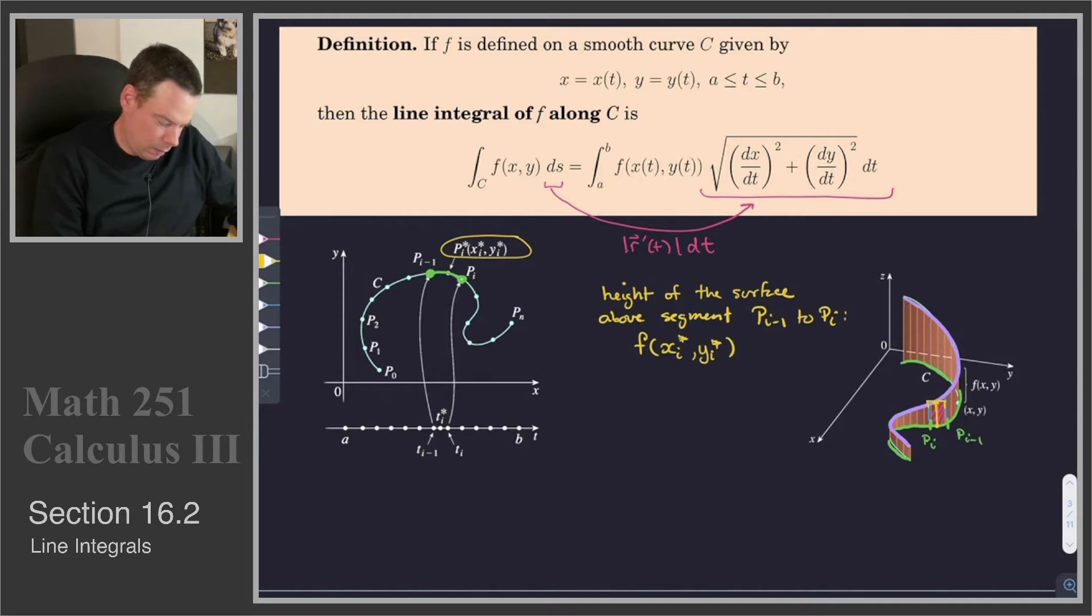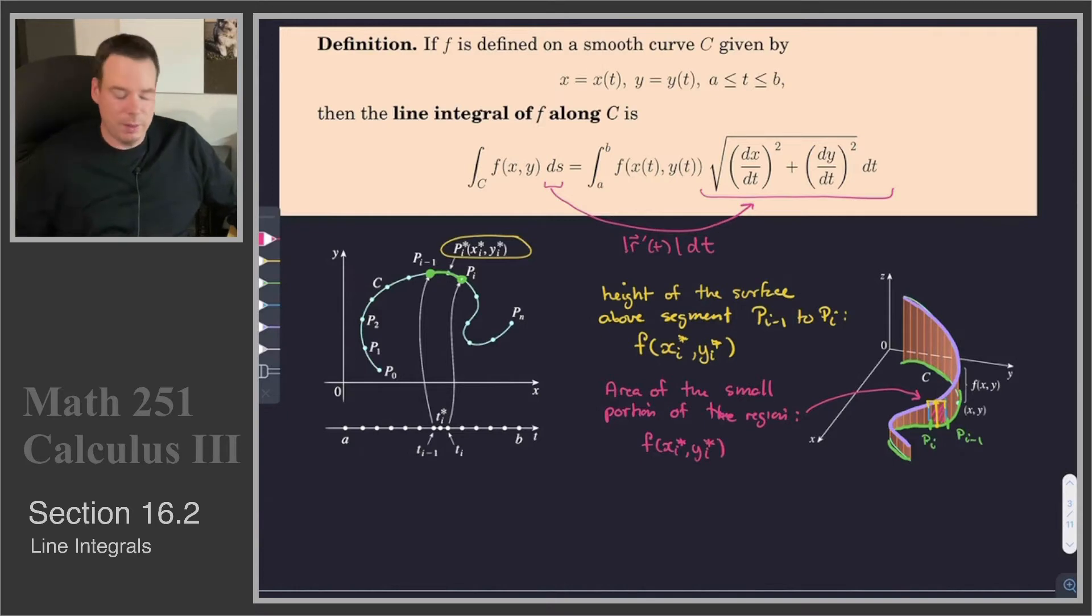So now what do we have? We have that the height of that region is f(xᵢ*, yᵢ*). What would the area be? The area of the small portion of the region—that one given right there—would be the height f(xᵢ*, yᵢ*) times the base. And what is the base? Well, the base is just that length of the curve along that segment. So that is what we can call ds or Δs, a small change in the arc length. So there's the area of a small portion.